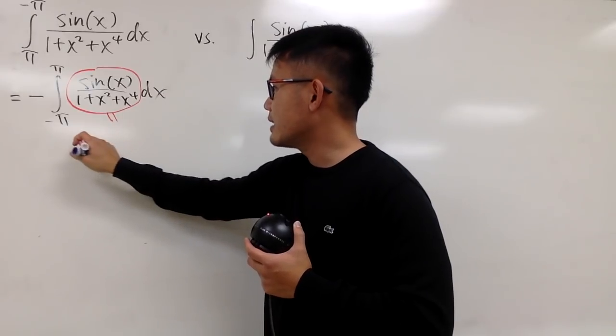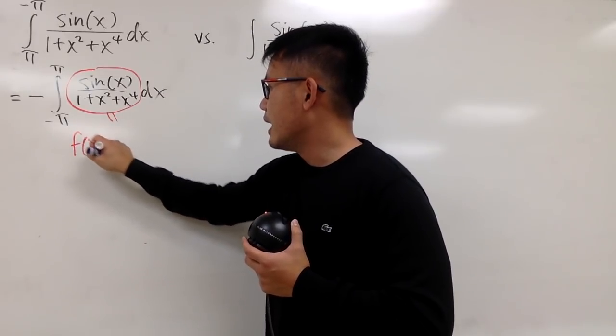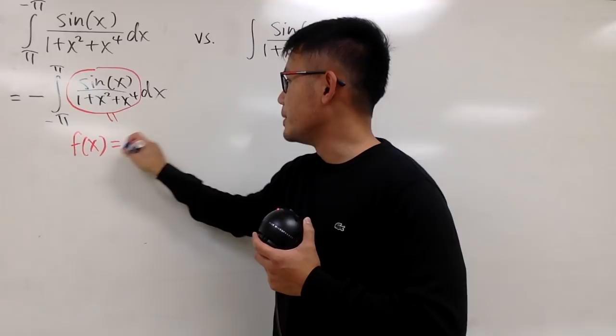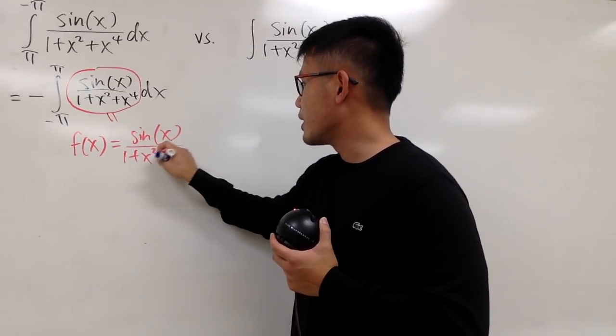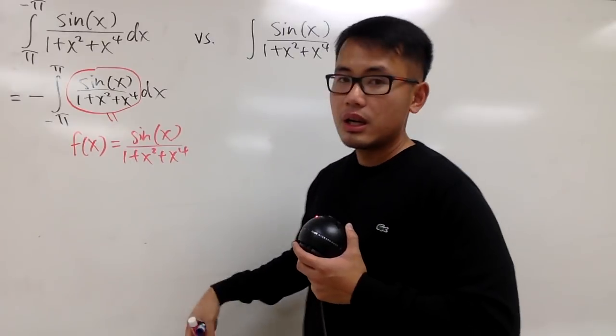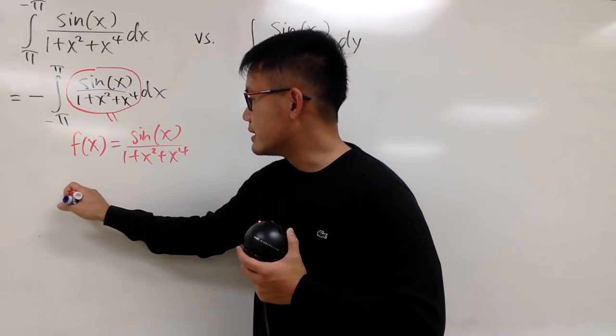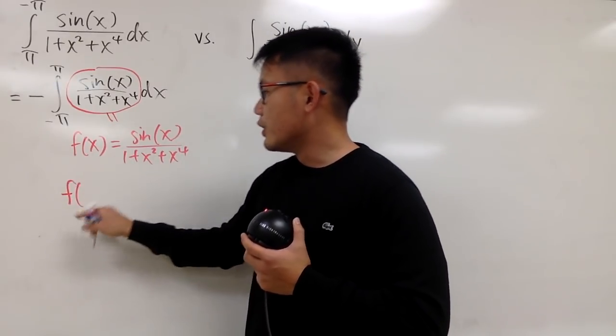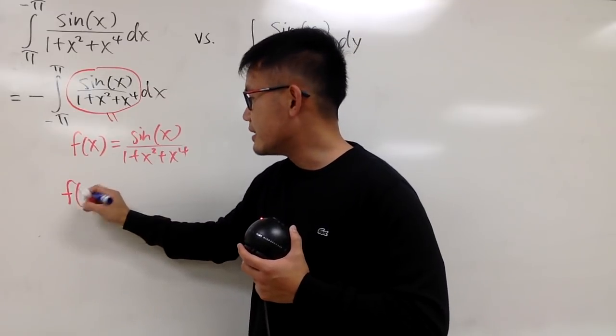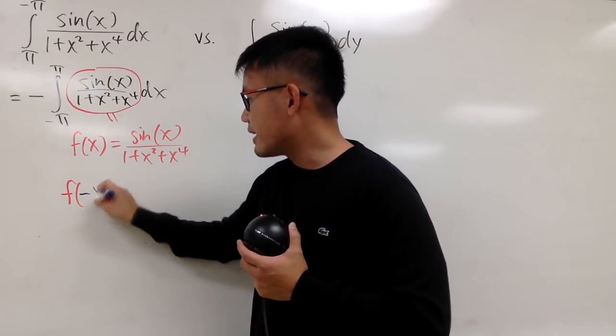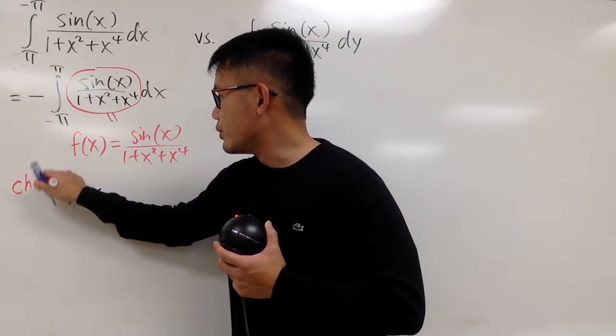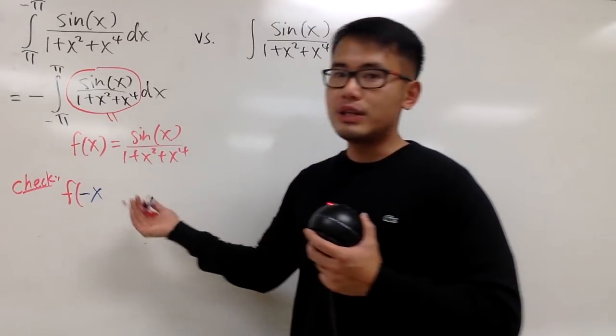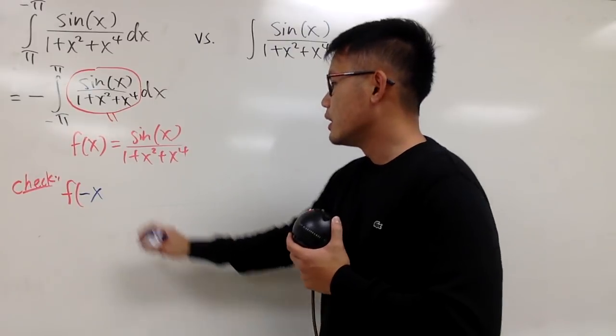So I will tell you guys that if you see f(x), if you call that to be sin(x) over 1 plus x squared plus x to the fourth power, and to show this is even or odd, what you do is you put down f and then inside is going to be negative x. You check, right? This is the work that you do to convince people that you actually have an even or odd function.